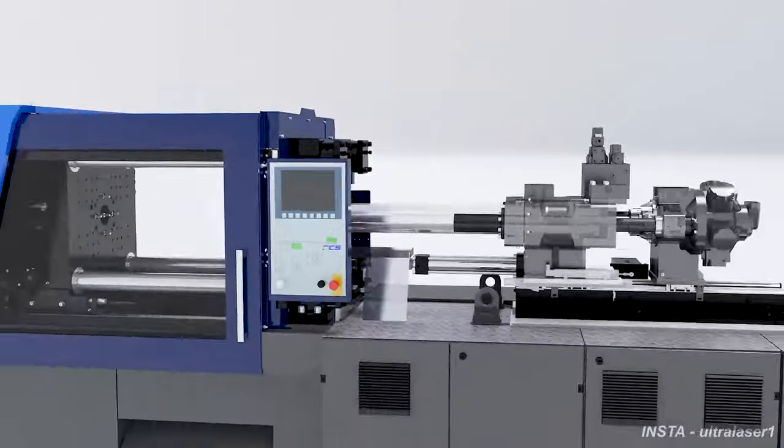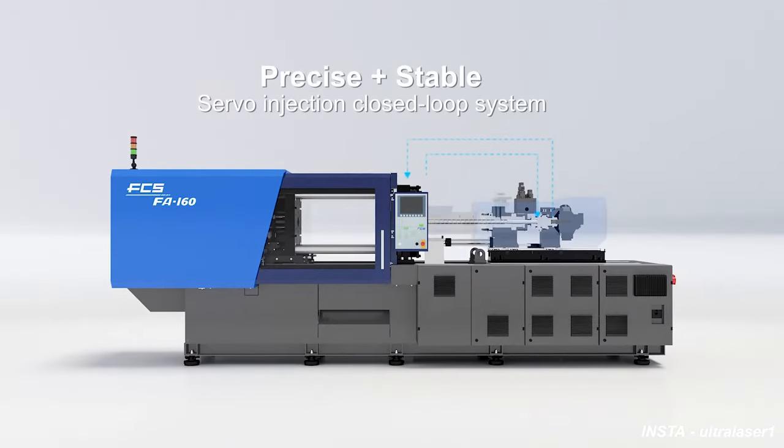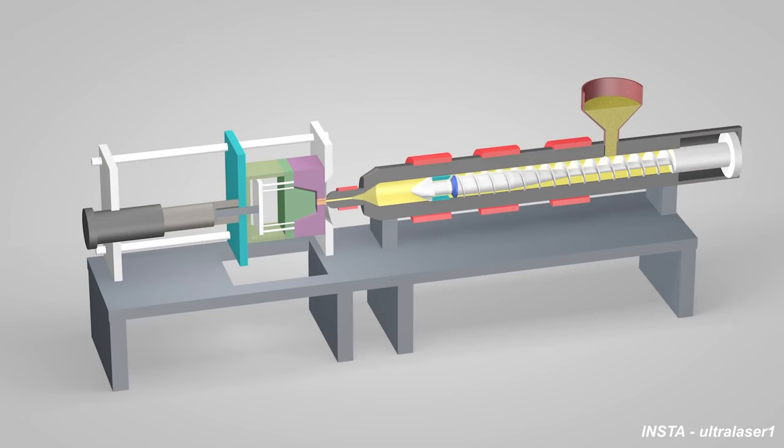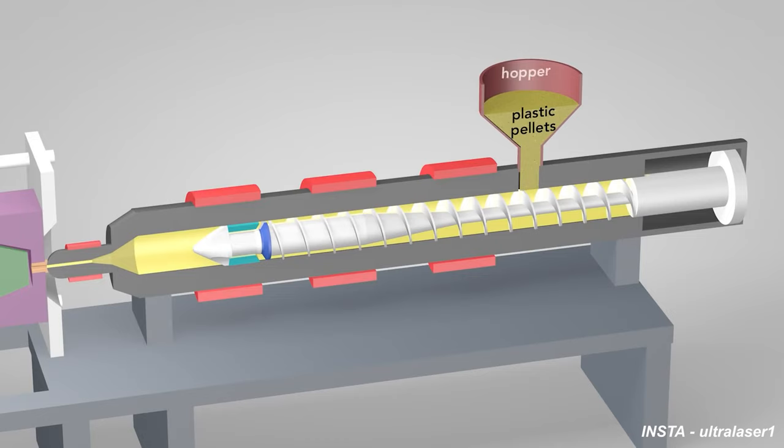An injection molding machine has three main parts: the injection unit, the mold, and the clamp. Plastic pellets in the hopper feed into the barrel of the injection unit.